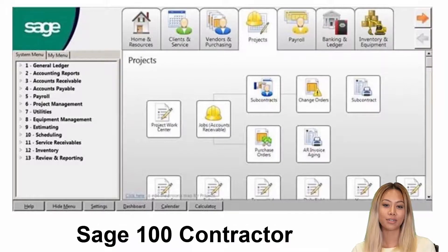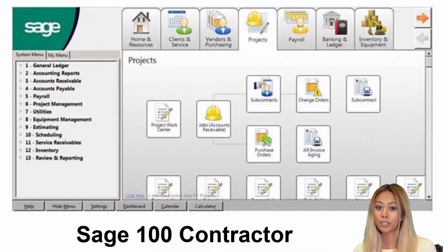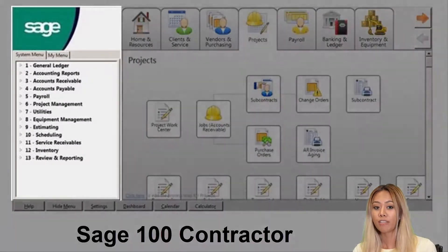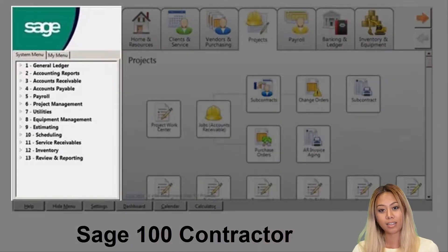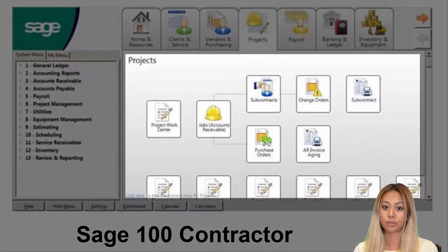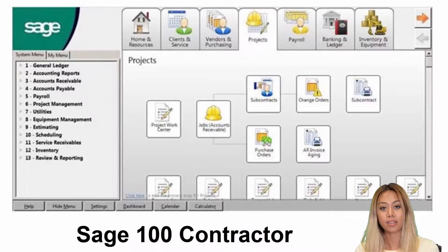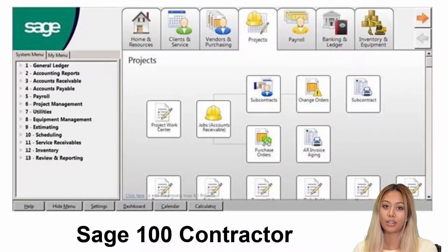Now let's take a look at the screenshots of each of these systems. With SAGE 100 Contractor, you can see icons above the top to help you navigate through the system. Similarly, you have another menu along the left side. Each user has the ability to utilize the main menu to create their own user-defined workflow — something that a lot of customers find very easy and user-friendly.